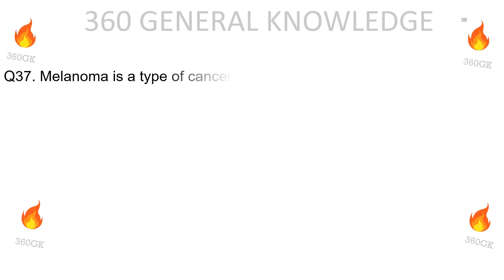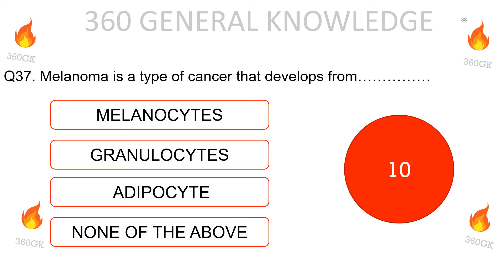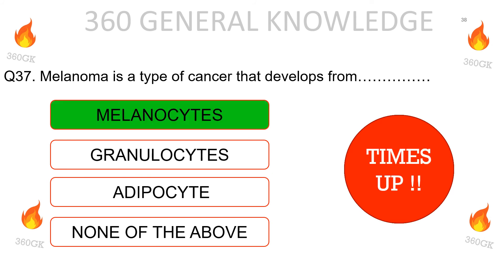Melanoma is a type of cancer that develops from: melanocytes, granulocytes, adipocytes, or none of the above? The correct answer is melanocytes.